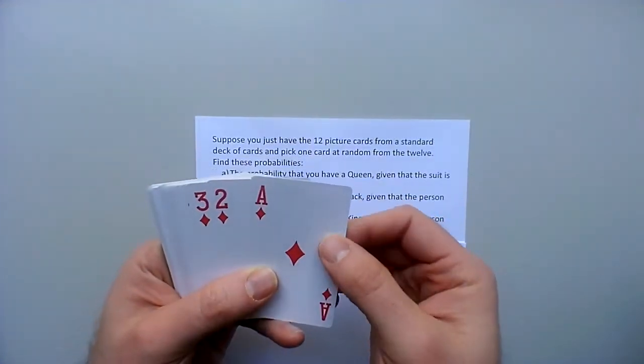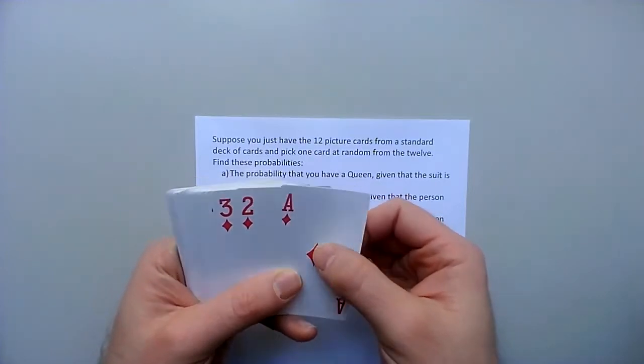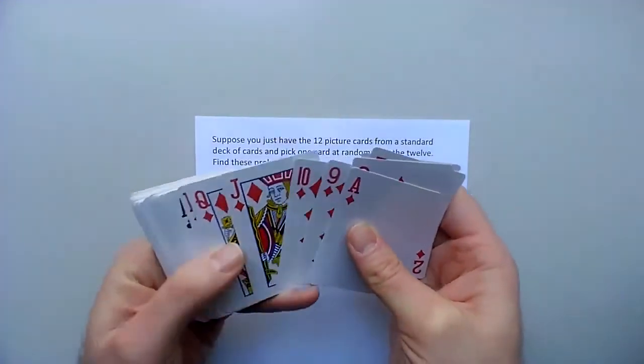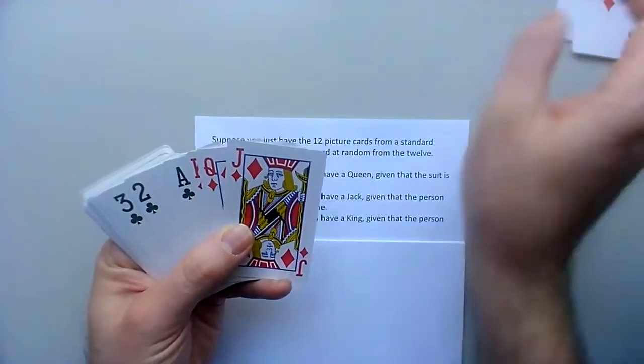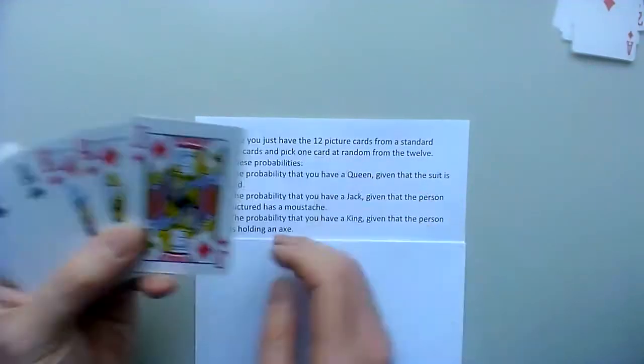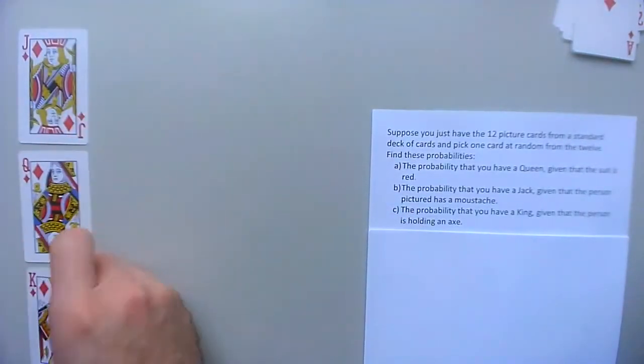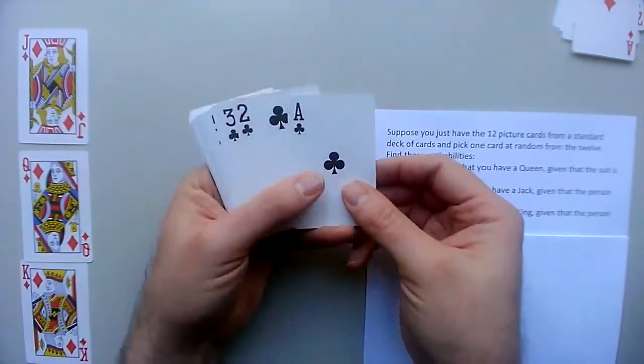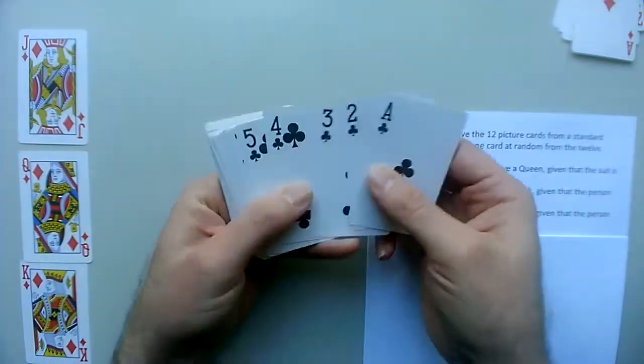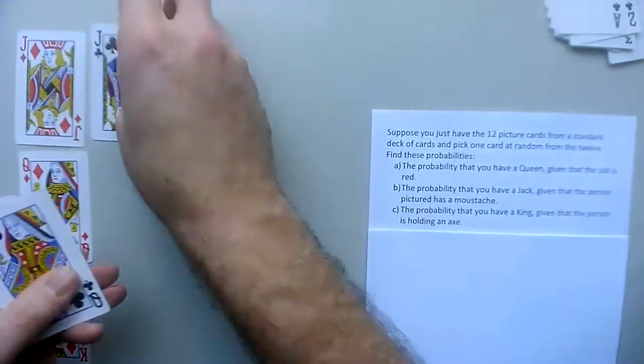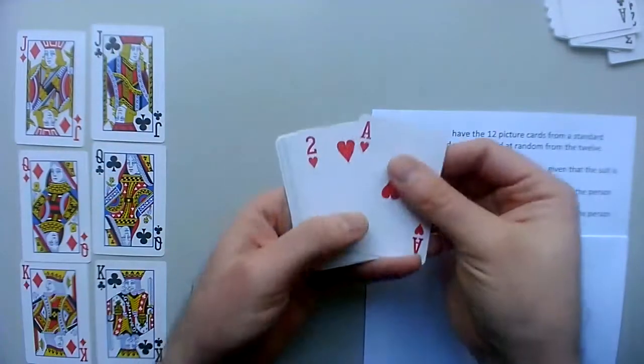So here's one. It starts with diamonds which are red and it goes ace two three all the way up to ten, and they're the picture cards there, the ones with faces on them, so we have jack queen and king of diamonds. Then I've got clubs which are black, and it goes ace up to ten and then we've got jack queen and king of clubs.